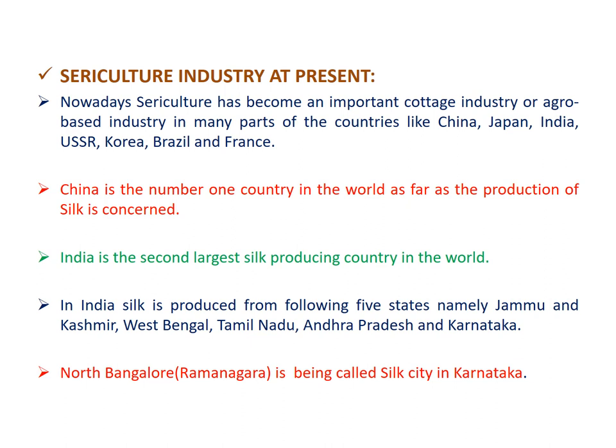In India, silk is produced from five states: Jammu and Kashmir, West Bengal, Tamil Nadu, Andhra Pradesh, and Karnataka. North Bangalore is called the Silk City of Karnataka.